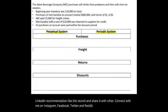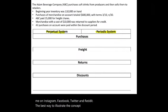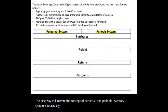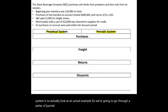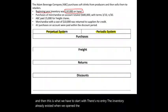The best way to illustrate the concept of perpetual and periodic inventory systems is to look at an actual example. We're going to go through a series of journal entries, starting with beginning inventory of $110. This is what we have to start with — there's no entry, as the inventory already existed when we opened at the beginning of the period.